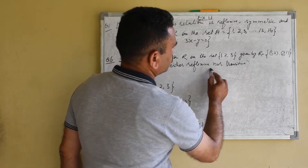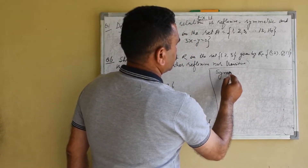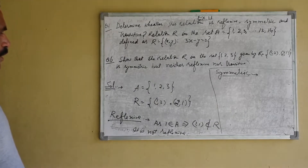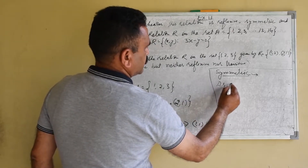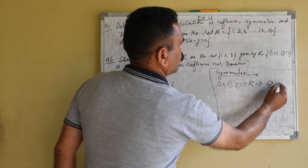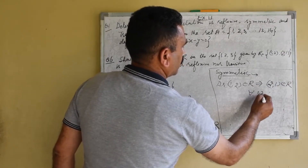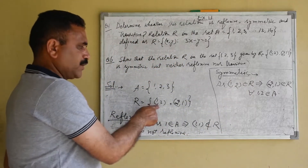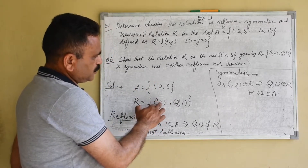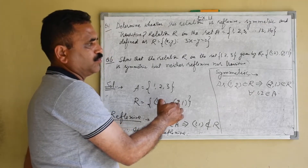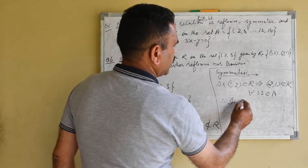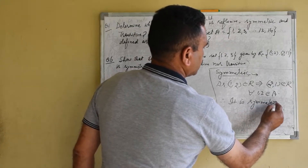Second, symmetric. Since (1, 2) belongs to R, this implies (2, 1) belongs to R. For 1 and 2 belonging to A, the ordered pair (1, 2) is in relation R, and the ordered pair (2, 1) is also in relation R. That means 2 is the image of 1, and 1 is the image of 2. Therefore, this is a symmetric relation.